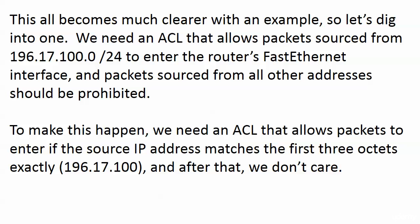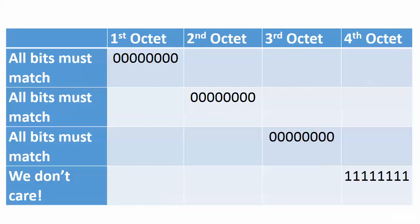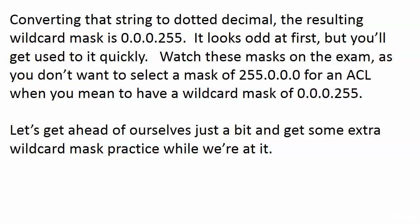We need an ACL that allows packets in if the source IP matches the first three octets exactly — 196.17.100 — and after that we don't care. The first three octets require all bits to match; the last octet we don't care about because the mask given is slash 24. So instead of all ones for the first three octets and all zeros for the last, as a slash 24 subnet mask would be, with a wildcard mask we turn the ones to zeros and zeros to ones. The first three octets become all zeros, and the fourth octet becomes all ones.